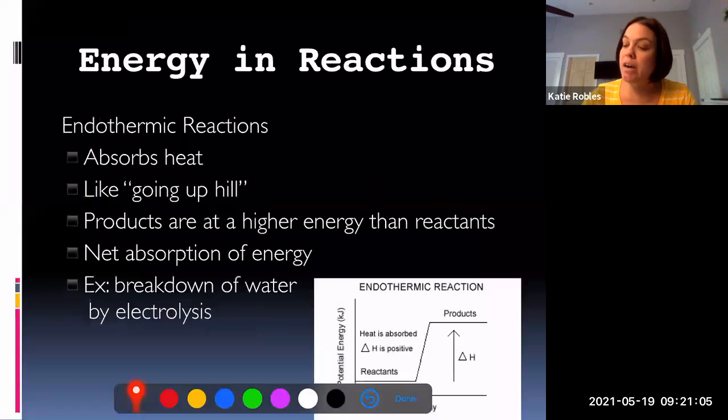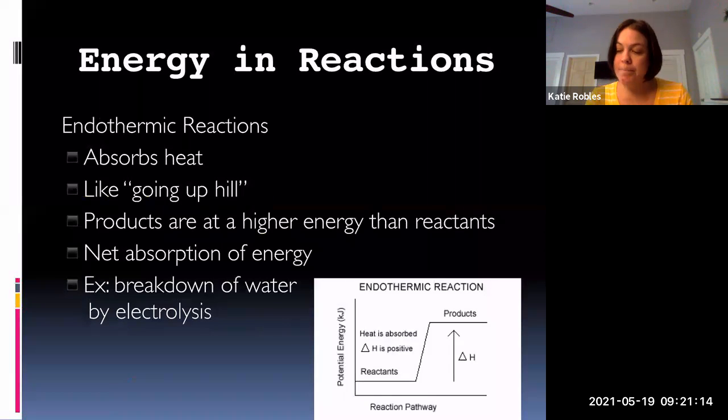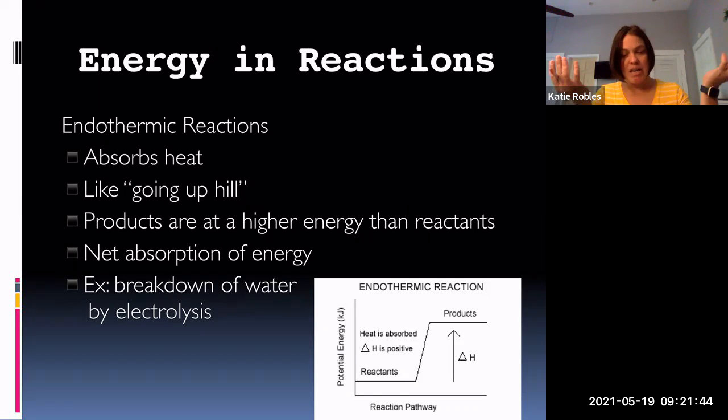All right, so in an endothermic reaction it's like going uphill, okay? It absorbs heat. The products are at a higher energy than the reactants, so the delta H is positive. That's the reaction pathway there. There is a net—we call it absorption—of energy. It absorbs energy. For example, the breakdown of water by electrolysis, that's where we take electricity and we pump it in to water and it breaks apart into hydrogen and oxygen—that absorbs energy when that happens.